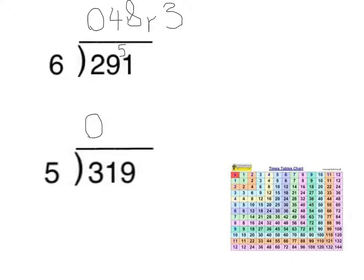So I've got my 0 up here above the 3 to show that 5 doesn't fit into 3. But it does fit into 31 6 times. And because 5 times 6 is 30, there's a remainder of 1.